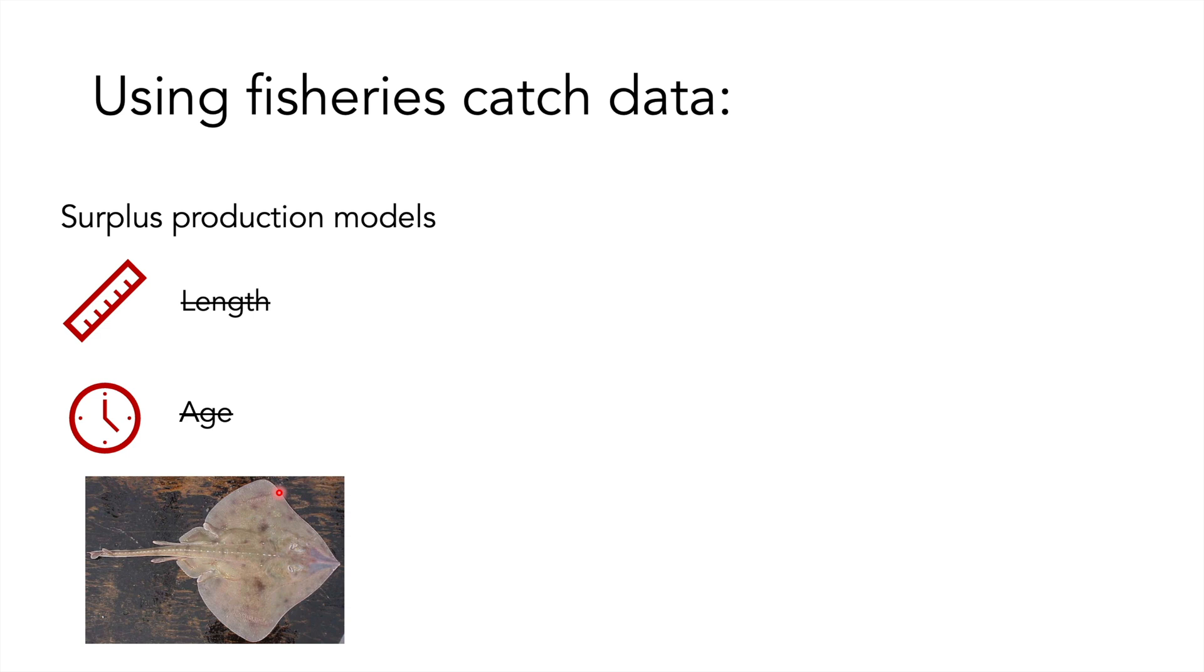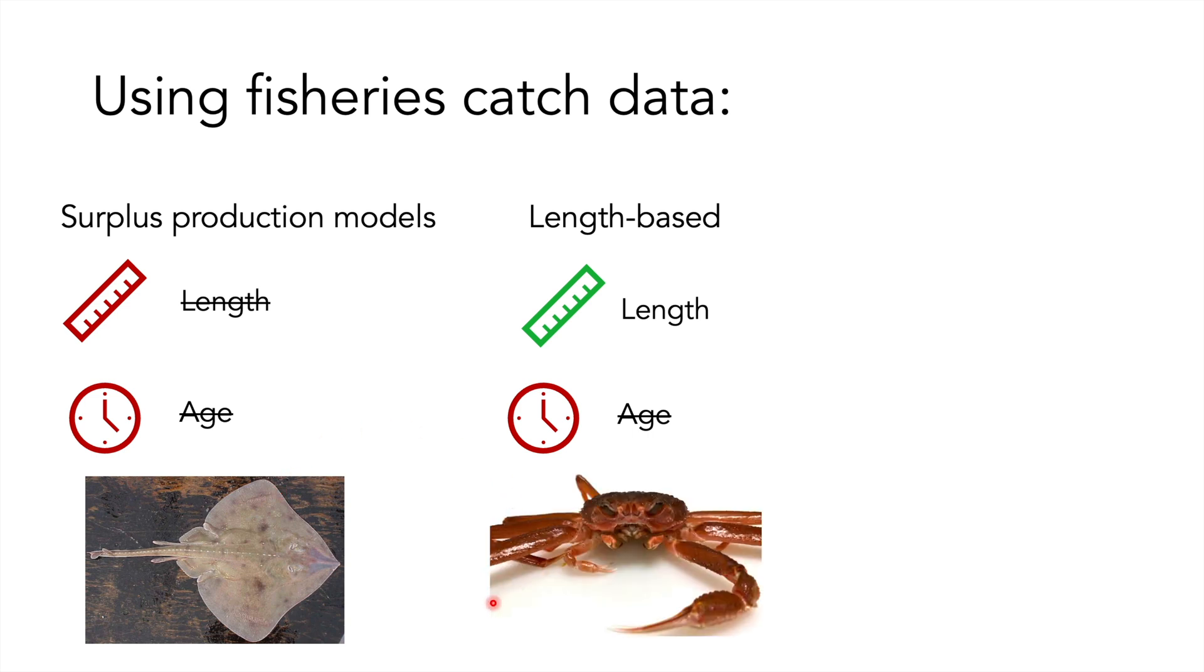Next, if we have length data but not age, we tend to do a length-based analysis. This is often used for crustaceans if these are difficult to age, for example in the Bering Sea snow crab fishery.